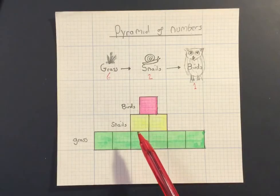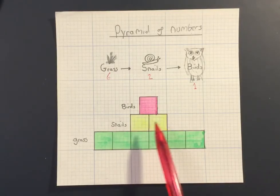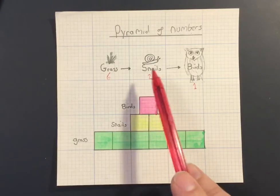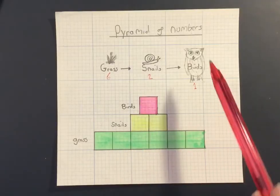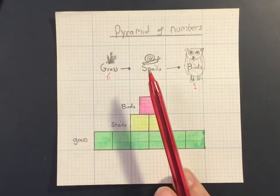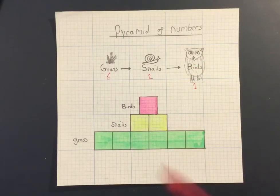Now if I go up a trophic level to my primary consumer, I've got two large squares which corresponds to my two snails. If I go up a trophic level again, I get to one bird. Now these pyramids of numbers are useful for showing the number of organisms.